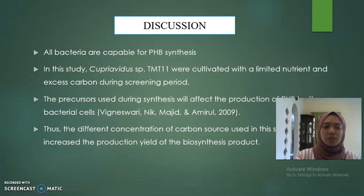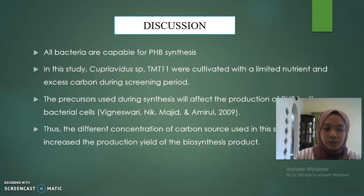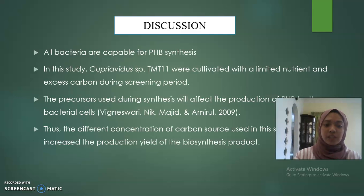For the discussion, all bacteria are capable of PHA synthesis. In this study, Cupriavidus sp. MT11 were cultivated with limited nutrients and excess carbon during the screening period. The precursors used during synthesis will affect the production of PHA by the bacterial cells. Thus, the different concentrations of carbon source used in this study increased the production yield of the biosynthesis product.